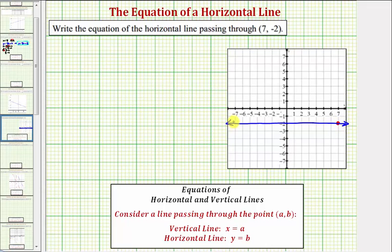Now by analyzing this horizontal line, notice how every point on this line would have a y-coordinate of -2, which helps us find the equation of this line. The equation of this horizontal line is y = -2.